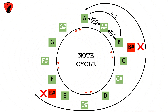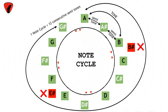One note cycle is equal to 12 consecutive semitones, starting from any note and ending on one note before the same note in the note cycle, and then you repeat your note cycle. Basically, each note repeats but at a different pitch after every 11 consecutive notes, or after every 11 consecutive frets on your guitar.